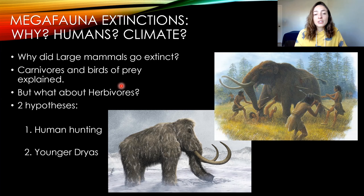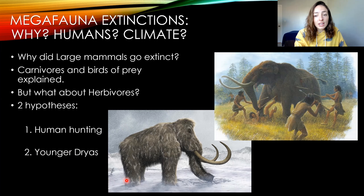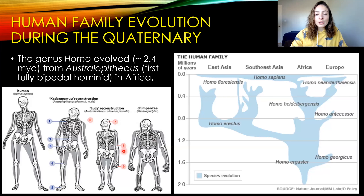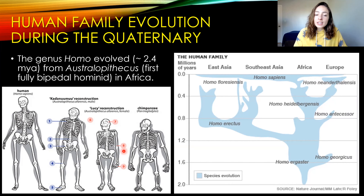To answer that, scientists have proposed a couple of hypotheses. The carnivores and birds of prey can be somewhat explained away — carnivores hunted many of the large herbivores that went extinct, and if their food source disappeared, they would too. Similarly, birds of prey that scavenged on these animals could have gone extinct for the same reasons. But why did the large herbivores start to go extinct in the first place?